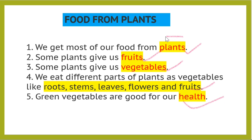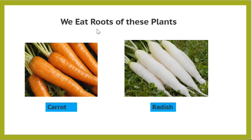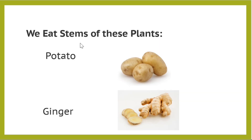Now let's repeat: we get most of our food from plants. Some plants give us fruits, some plants give us vegetables, and green vegetables are good for our health. We eat different parts of plants, like flowers, roots, stems, and leaves.